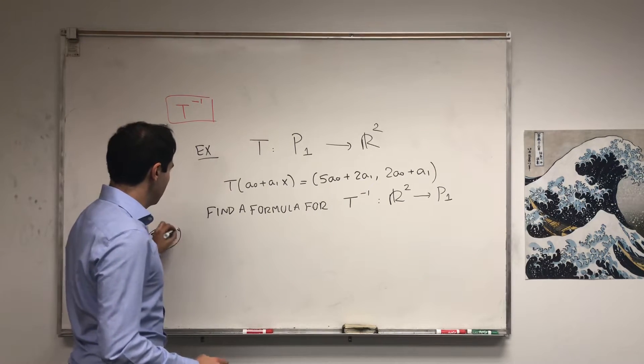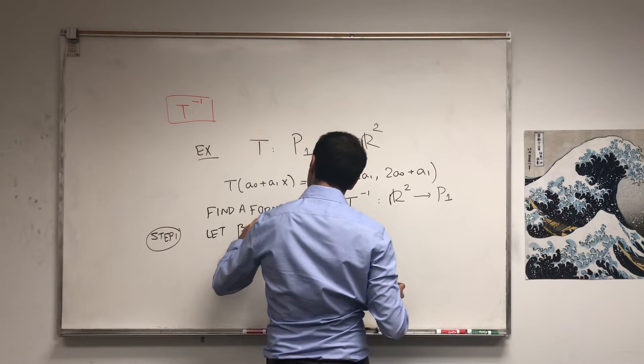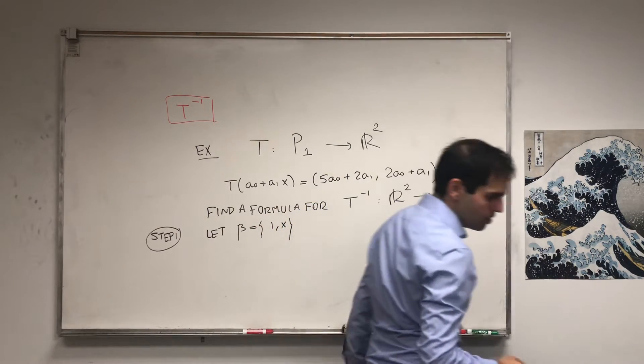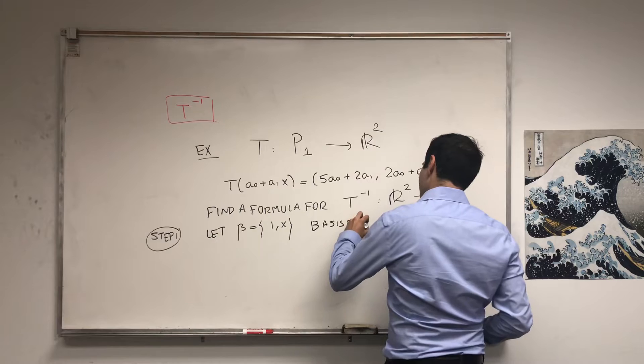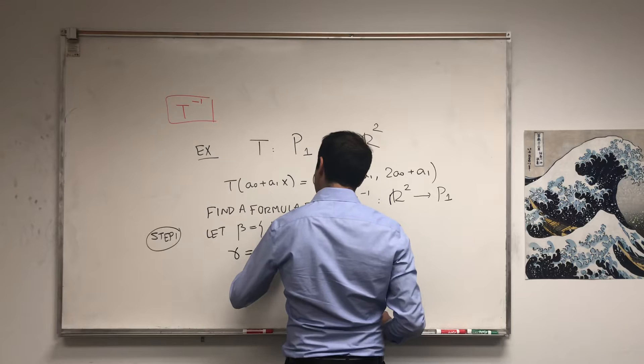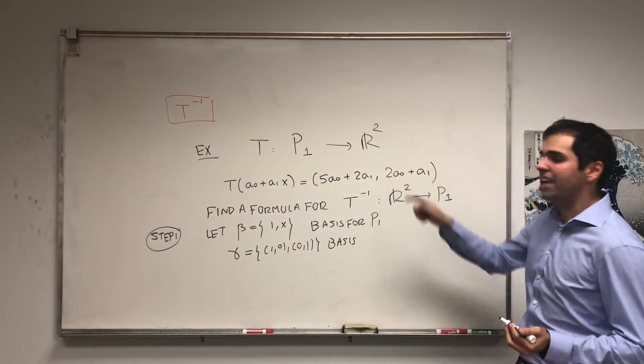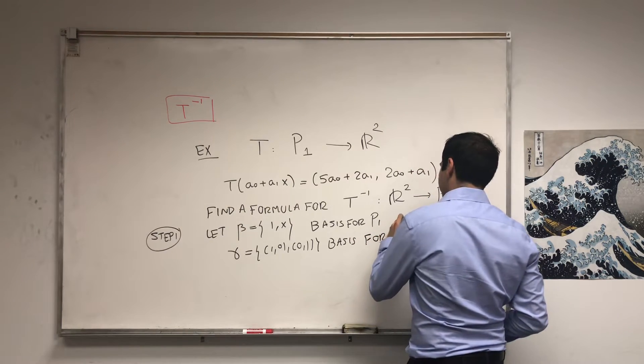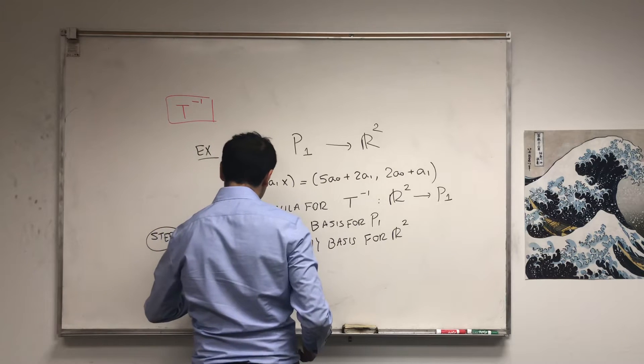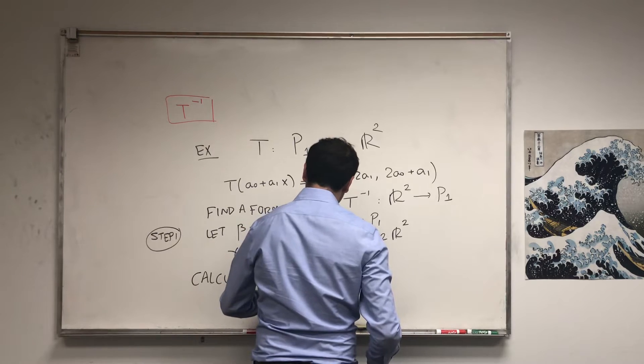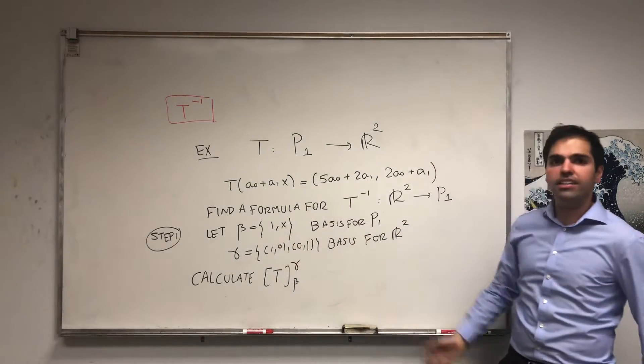So, step one, let's calculate some matrix of T. And for this, we need bases. So let beta be 1 and x, a basis for P1. And gamma be 1,0 and 0,1 be a basis for R2. Just choose the easiest basis in order to calculate a matrix of a linear transformation. Then, the first step is calculate the matrix of T with respect to the two bases, from beta to gamma. And to do that, very easy, you calculate T of the basis vectors and write it in terms of the output basis.